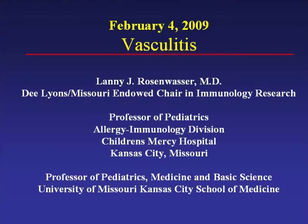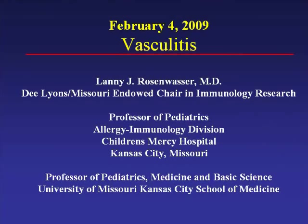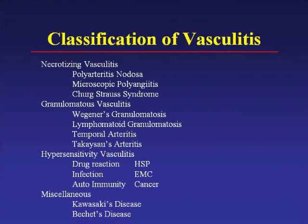Thank you very much, Jay. It's a pleasure to speak with everyone tonight and to review a little bit about vasculitis. The outline of what we're going to speak about tonight will be predominantly focused on the Churg-Strauss syndrome, which is allergic angiitis and granulomatosis. The definition of vasculitis is hemorrhage and necrosis of blood vessels due to inflammation within the blood vessels, with fibrinoid necrosis and extravasation of red cells and tissue damage. Multiple organ systems are often the target.